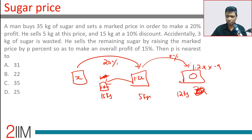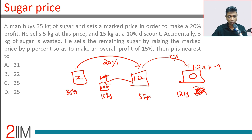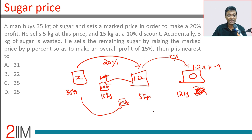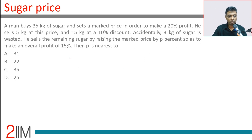He sells the remaining 12 kg at some raised price, and if we find that price we can find p percent. He wants to make an overall profit of 15%, meaning for the 35 kilograms he wants total revenue equivalent to 35 × 1.15x.